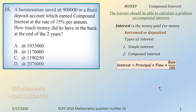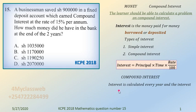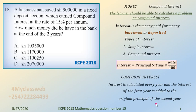This question is on compound interest and it was done in the KCPE for the year 2018. Now, how do we calculate compound interest? Compound interest is calculated this way: the interest is calculated every year, and the interest of the first year is added to the original principal for the second year. Let us go to this question and read it so that we understand what the examiner wants us to do.